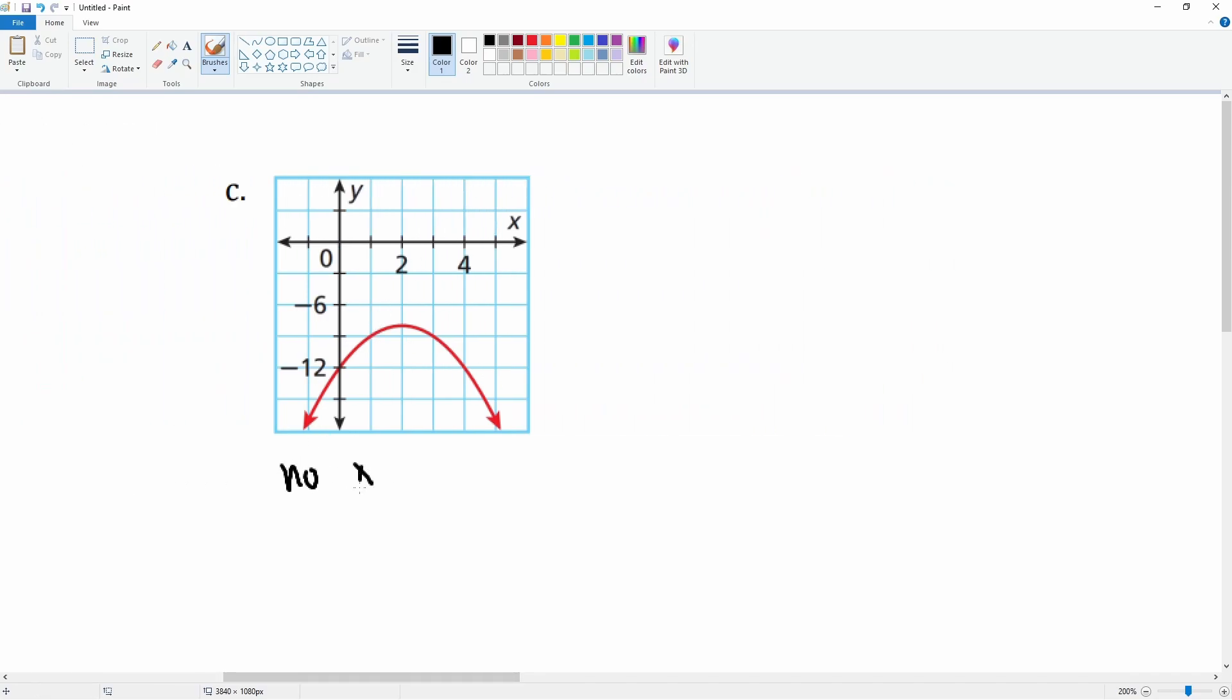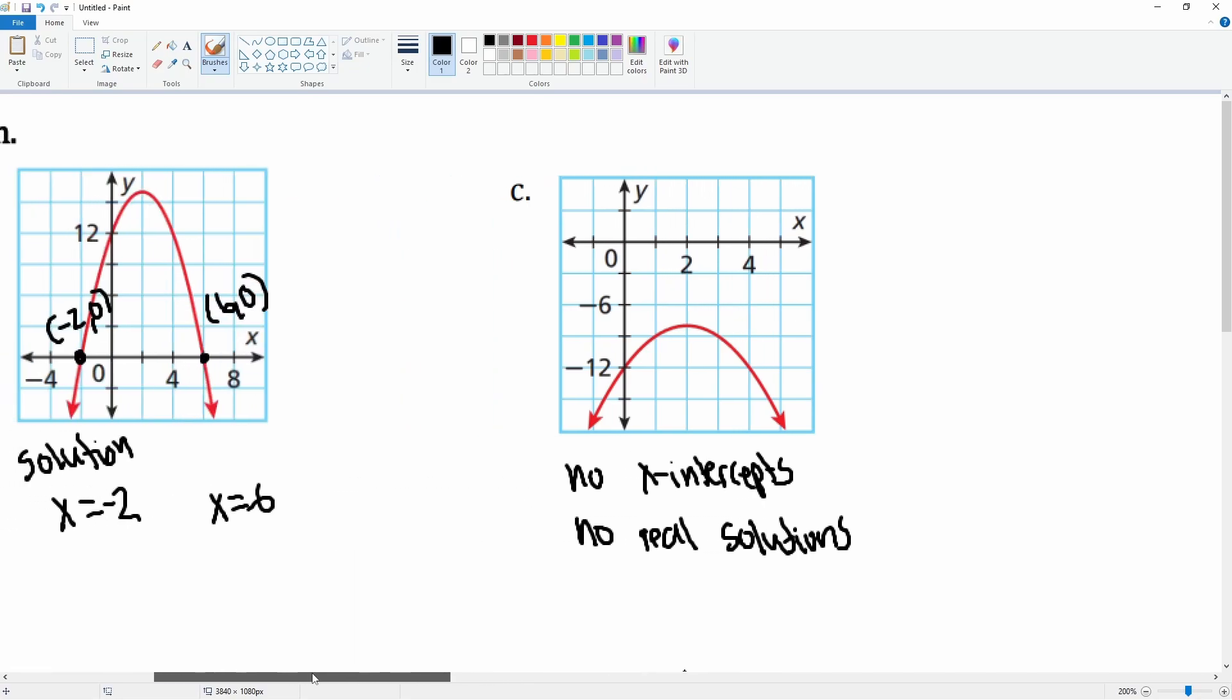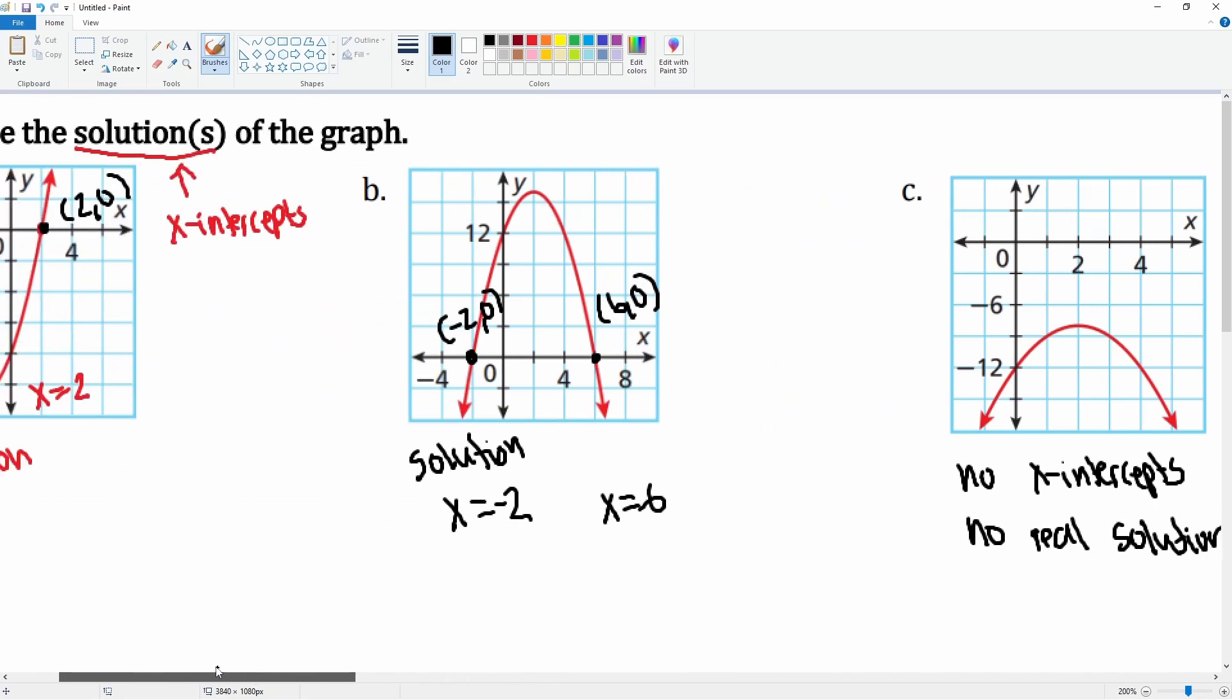There are no x-intercepts, and the fact that there are no x-intercepts means we would say that there are no real solutions to this quadratic. Remember, a quadratic does not always have to have real solutions. C has no x-intercepts, so therefore it has no real solutions.